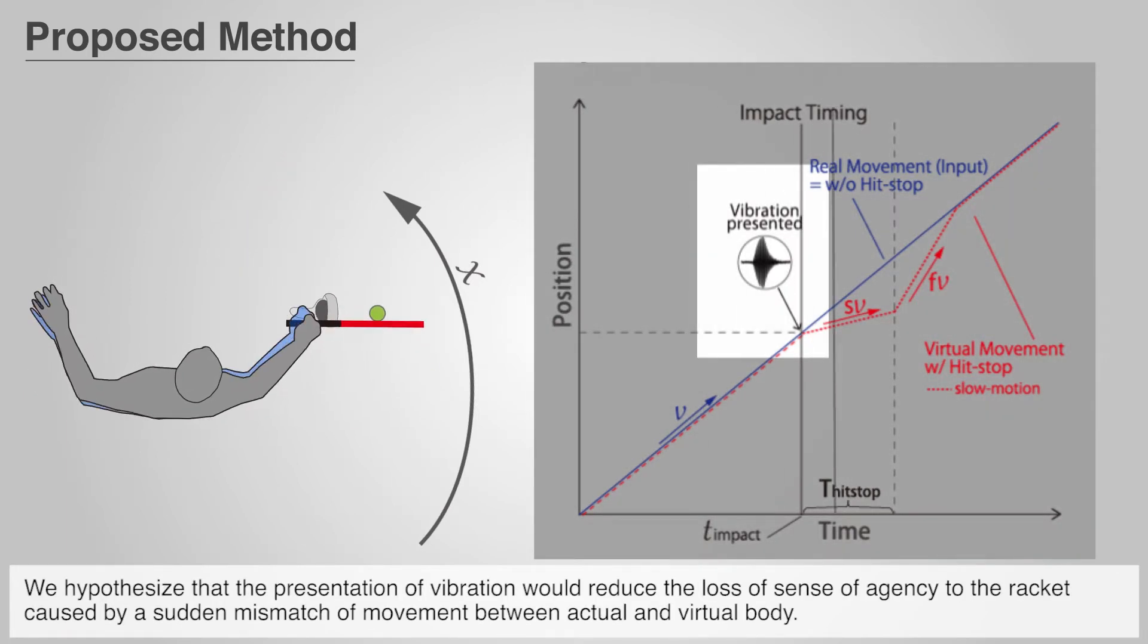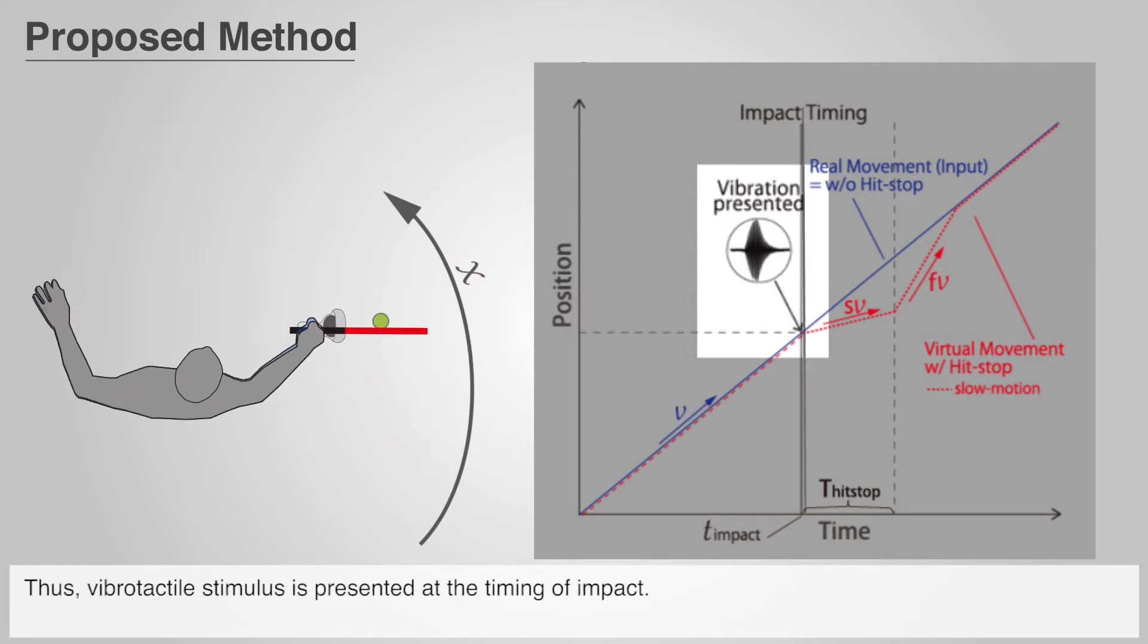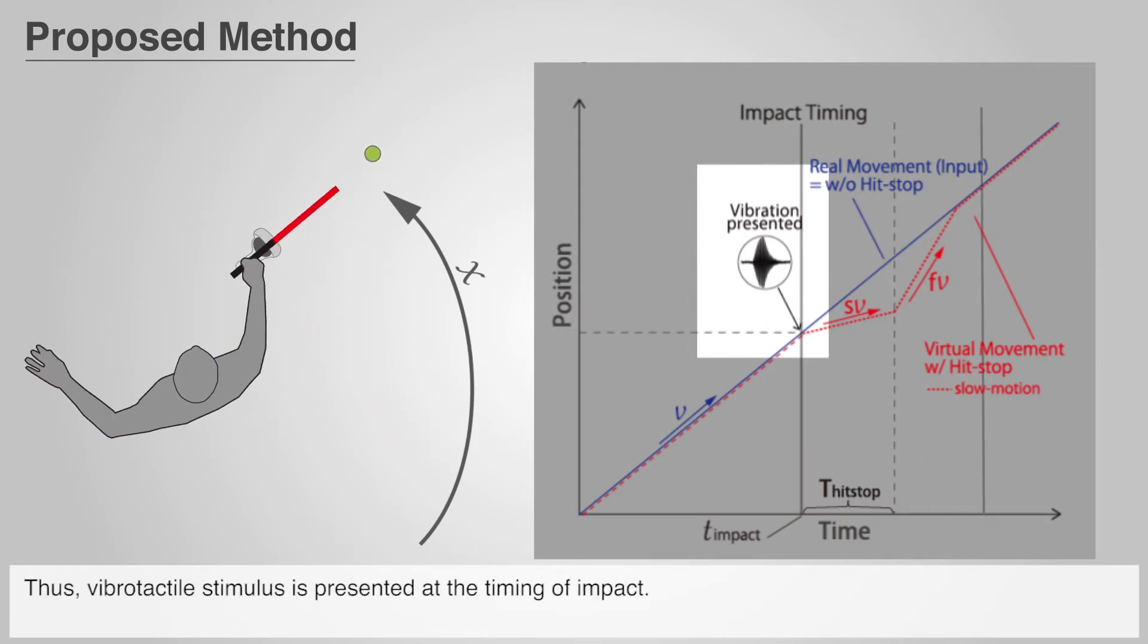We hypothesized that the presentation of vibration would reduce the loss of sense of agency to the racket, caused by a sudden mismatch of movement between actual and virtual body. Thus, vibrotactile stimulus is presented at the timing of impact.